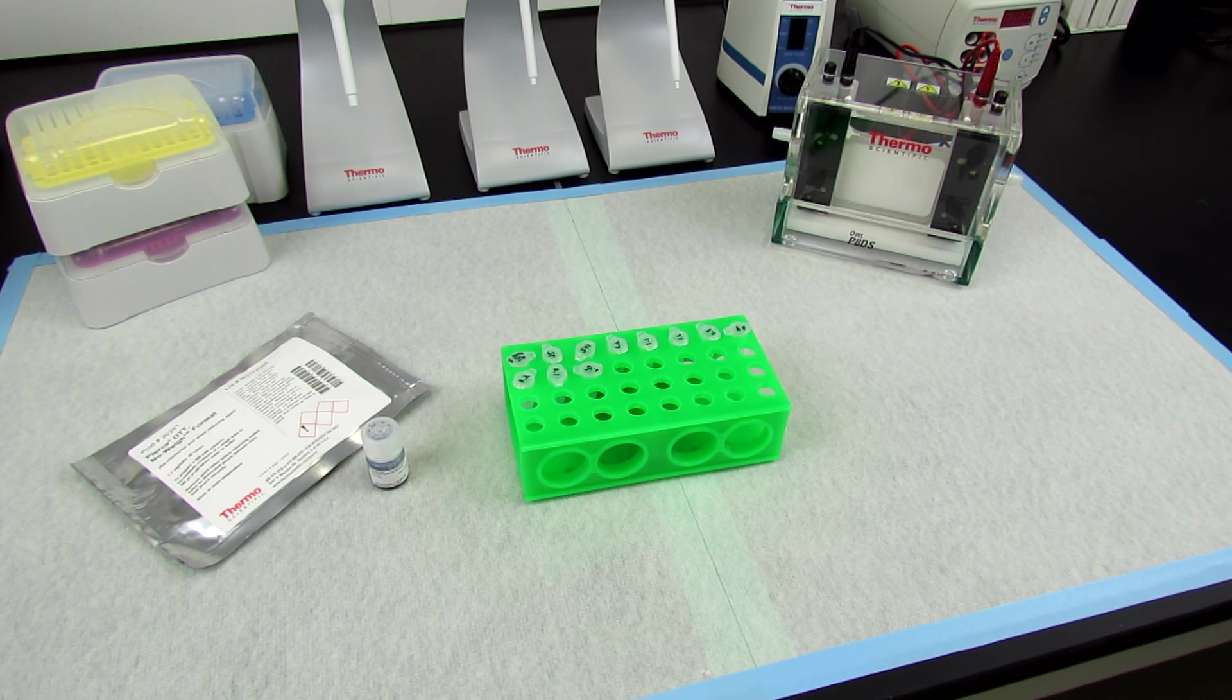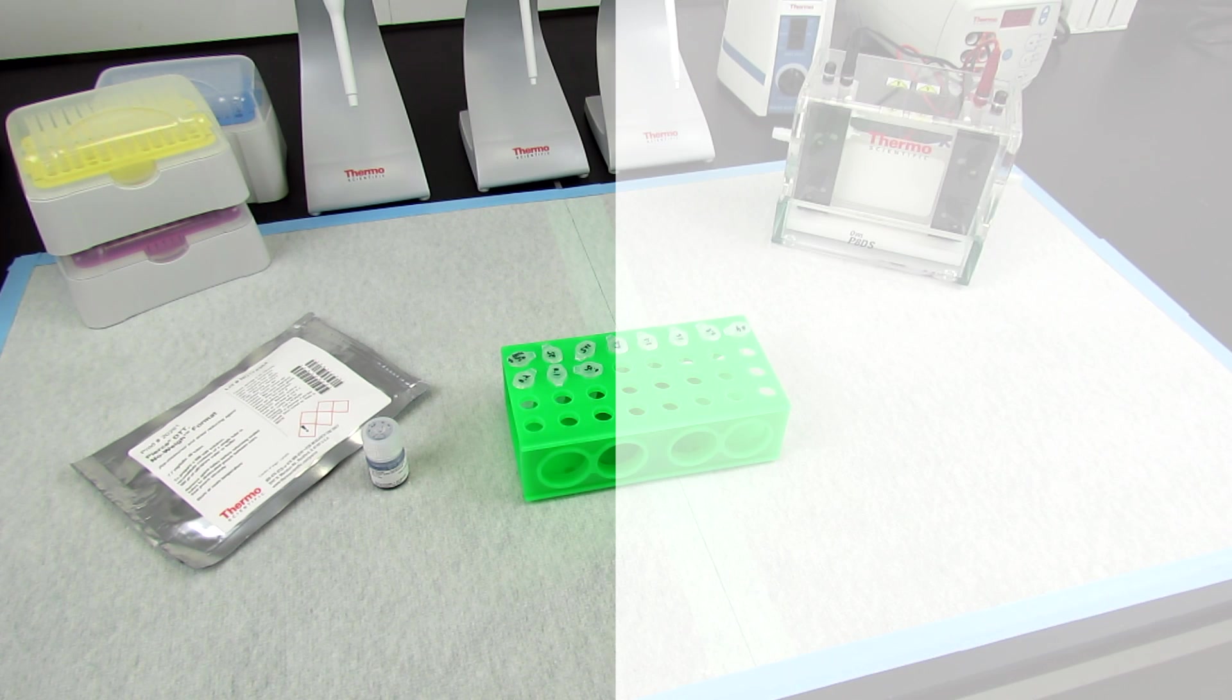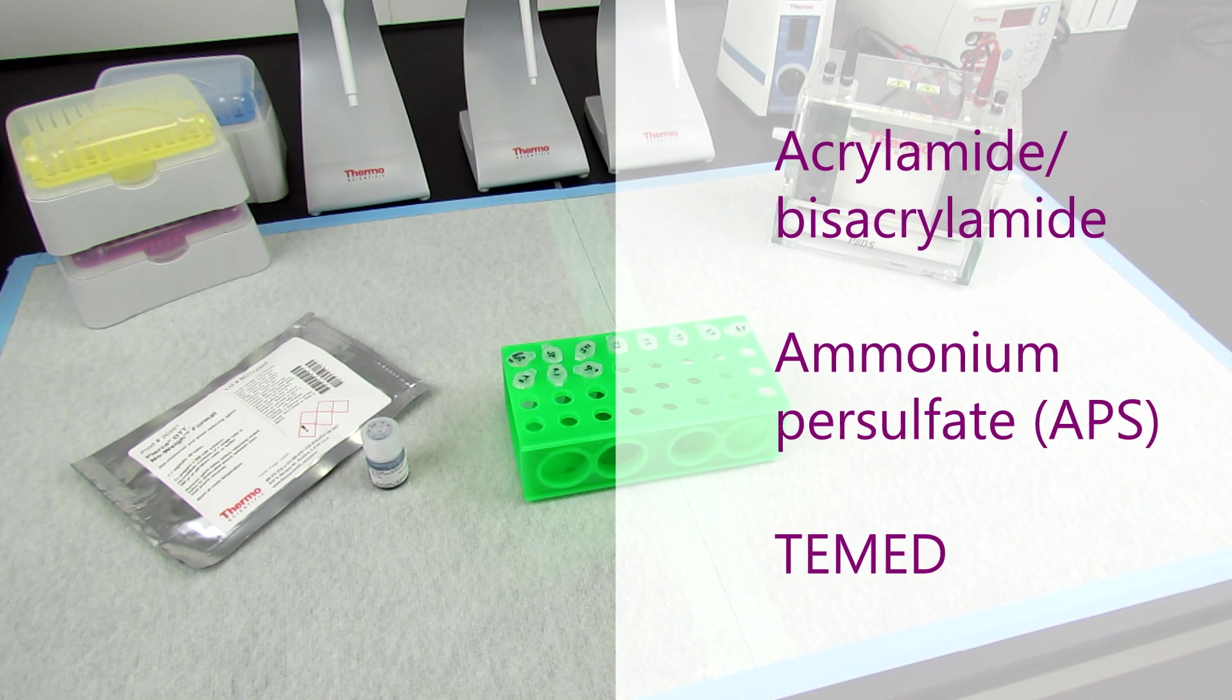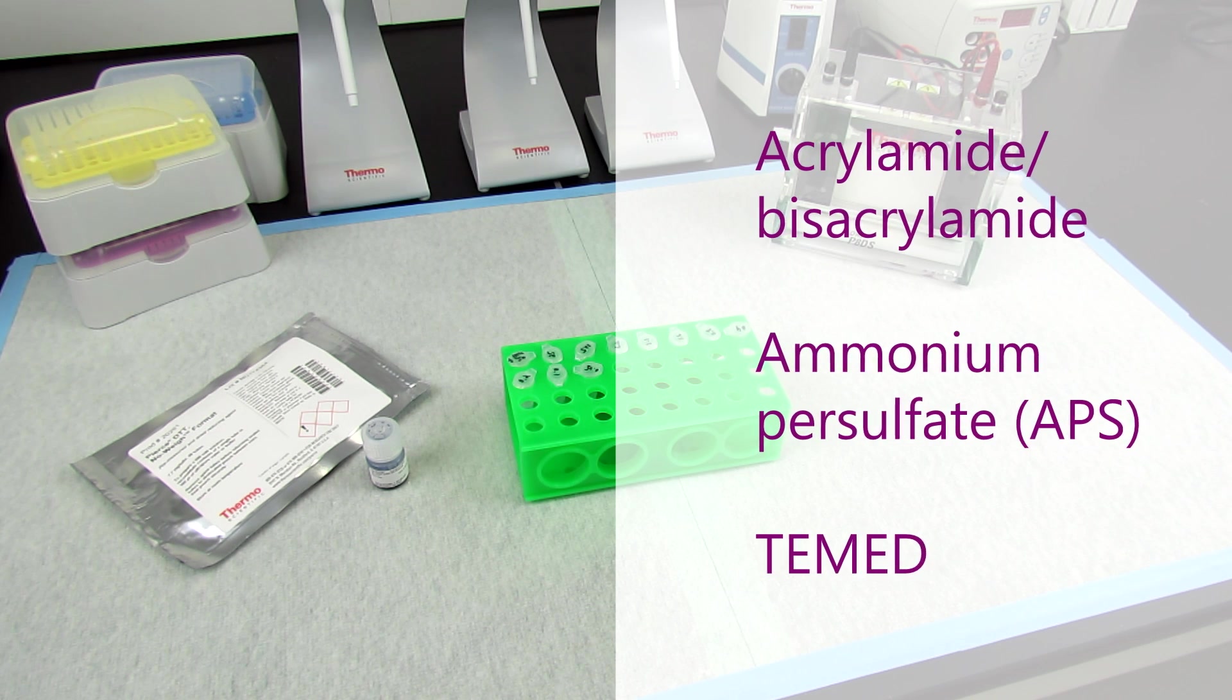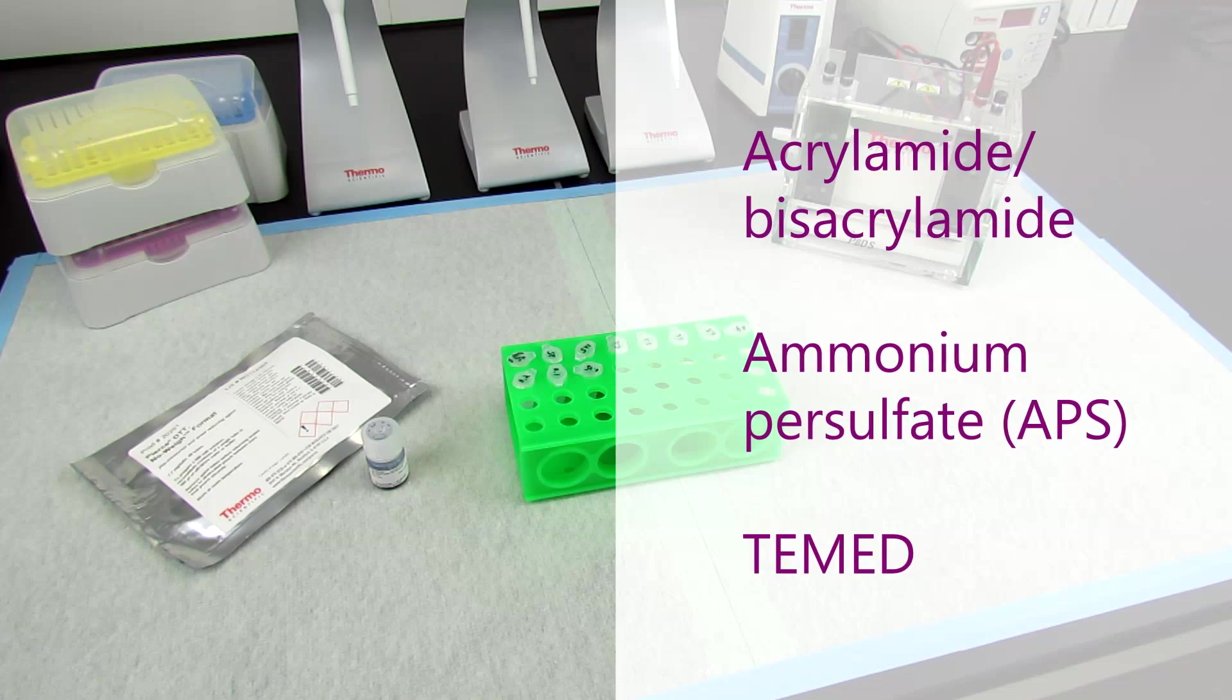Polyacrylamide gels can be poured in the lab by combining various concentrations of acrylamide and bisacrylamide with the cross-linker ammonium persulfate and TEMED, which catalyzes the polymerization reaction.